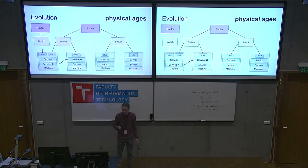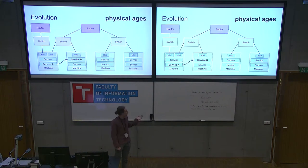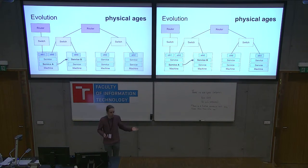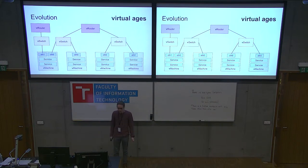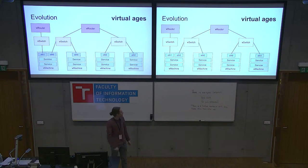Another problem with this architecture is that if service A wants to access service B, service A needs to know the IP address of the second machine and then the port on which service B runs in order to access it. And in case service B moves to another machine, service A must be notified that the IP address changed. So that's another problem connected with this approach. Then we got into the virtual age and much didn't change — we still have our machines, switches, and routers; the topology is pretty much the same. We just made a virtual machine from a machine and a virtual switch from a switch and so on.